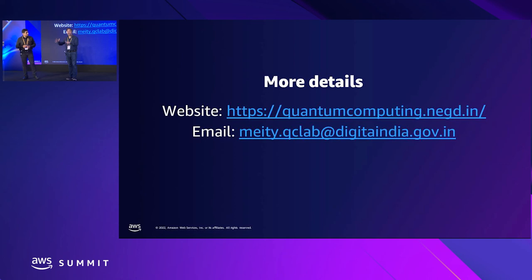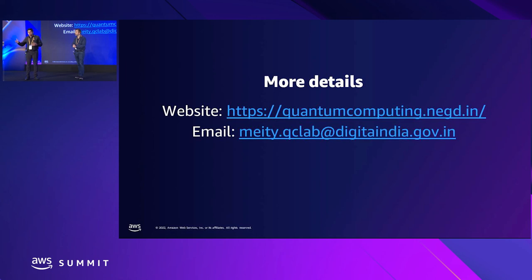Second, there are already protocols called post-quantum cryptography that are conjecturally known to be safe against attacks carried out using quantum computers. AWS has already implemented these protocols — for example, for Transport Layer Security (TLS). So quantum computers are a potential threat to certain cryptography, but there are already tools available to address this threat. Some algorithms are already available, and by the time quantum computing reaches that stage, there will be many more.